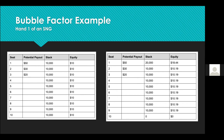In 10-man sit-and-gos, which I specialized in early in my career, everybody starts with the same stack and the prize pool splits 50/30/20. If two people get it all-in on the very first hand, the player who doubles from 10,000 to 20,000 sees their equity increase from $10 to $18.44. Even at the start of a sit-and-go you can see that ICM is already a major consideration.